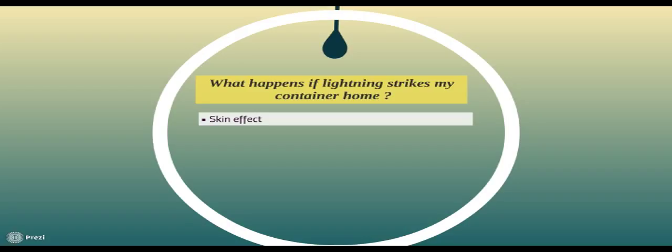You are safe inside your container home if lightning were to hit the container directly. The current confines itself to the outside of the metal skin of the container. The current travels along the outside and then finds the most direct route to ground. This is called the skin effect and is caused by an electromagnetic field generated by the lightning strike.